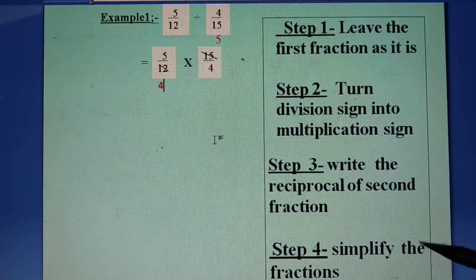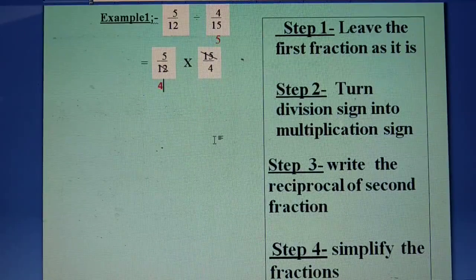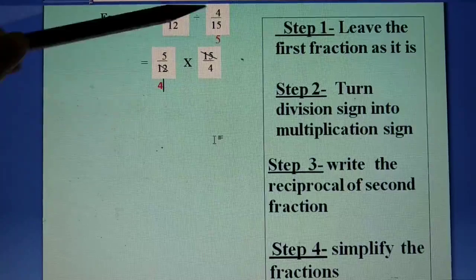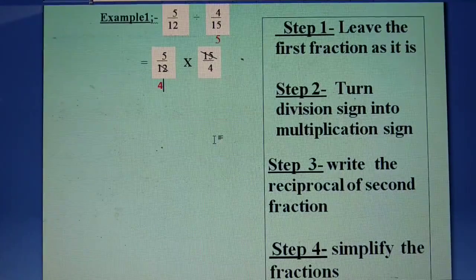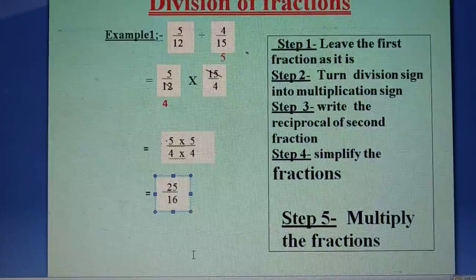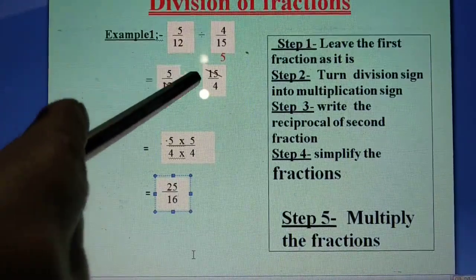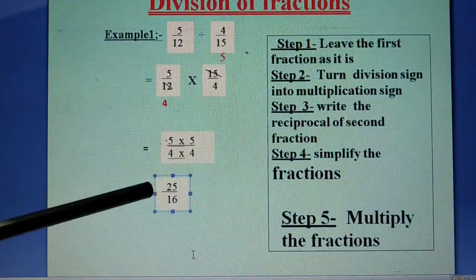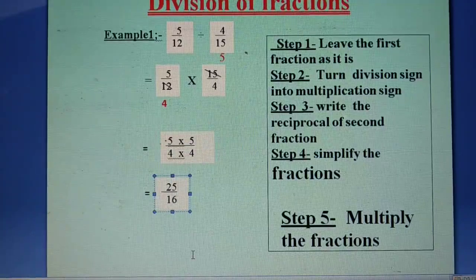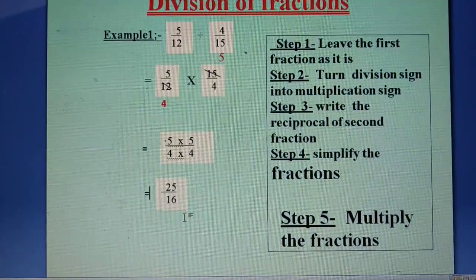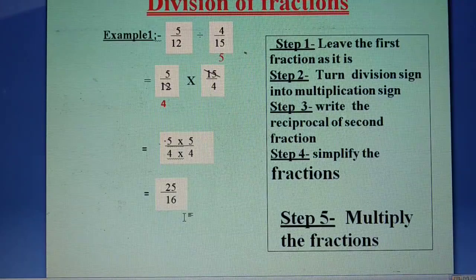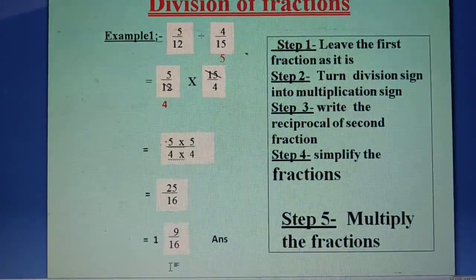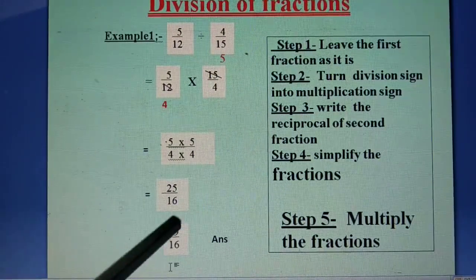Next step: simplify the fractions. We look for a common factor. 12 and 15 have a common factor of 3. So 3 fours are 12 and 3 fives are 15. Now multiply the fractions: 5 multiplied by 5 is 25, and 4 multiplied by 4 is 16. So the answer is 25 upon 16. As you can see, our answer is in the form of an improper fraction, so we will change it into a mixed number: 1 whole 9 upon 16.